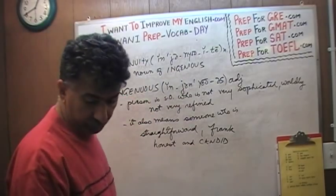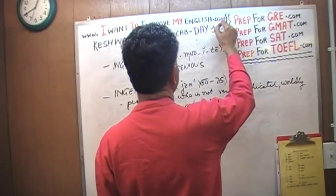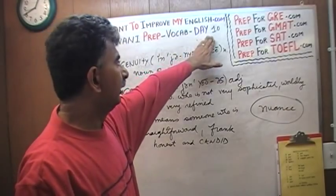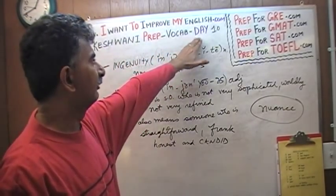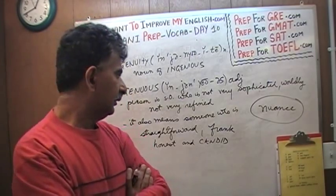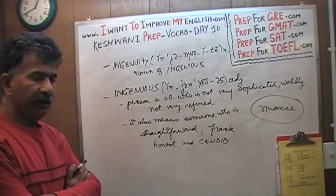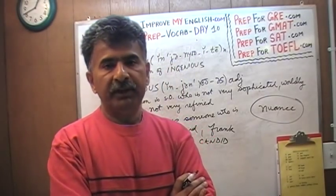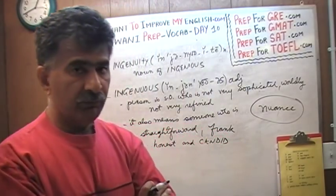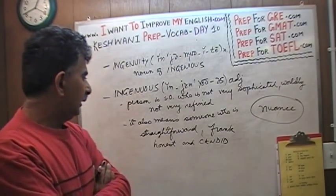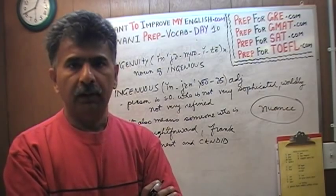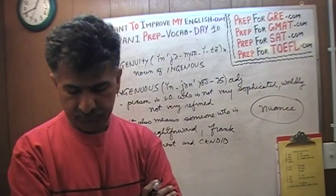If you do not know the word nuance, today is day number ten — go to the day one video by searching 'Keshwani prep dash vocab dash day one.' The very first word I covered was nuance, which means shades of meaning, minute subtle differences. An ingenuous person is somebody who is straightforward, frank, honest, and candid, but with the nuance of behaving almost like a child — not very sophisticated or worldly, just very straightforward, honest people, almost childlike.